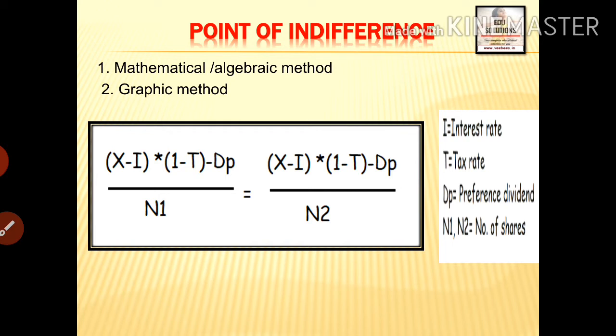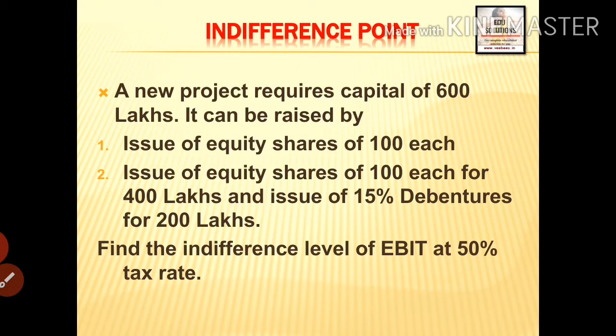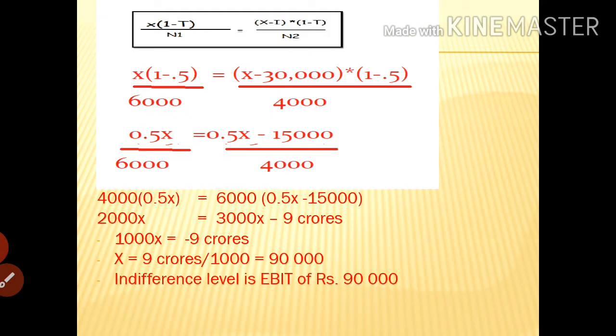Now we are discussing some problems related to indifference point. A new project requires capital of 600 lakhs. It can be raised by issue of equity shares of 100 rupees — this is financial plan one, all equity. The second plan is issue of equity shares for 400 lakhs and 15% debentures for 200 lakhs. Find the indifference level of EBIT at 50% tax rate.